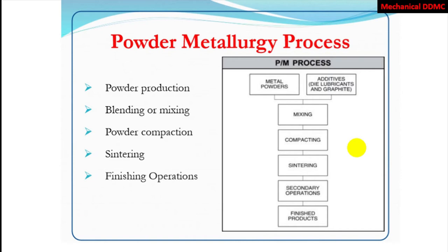For example, if we are to make components from iron, then powder production means the production of iron powder. One important thing in powder metallurgy is that we often use more than two metals, or we use alloys of different metals which are not capable of being used in other metallurgy processes. That's why in powder production, we produce different powders from different metals to make alloys in the powder metallurgy process. Blending and mixing, powder compaction, and sintering will be explained in the next slides.